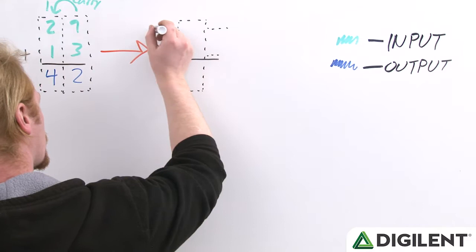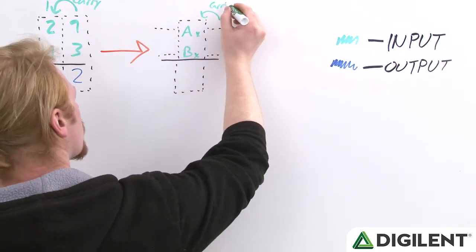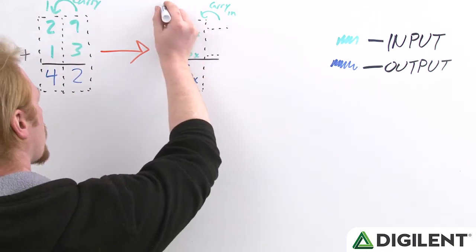That carry out bit is then included in the addition in the next place. This process is repeated until you run out of places to add.